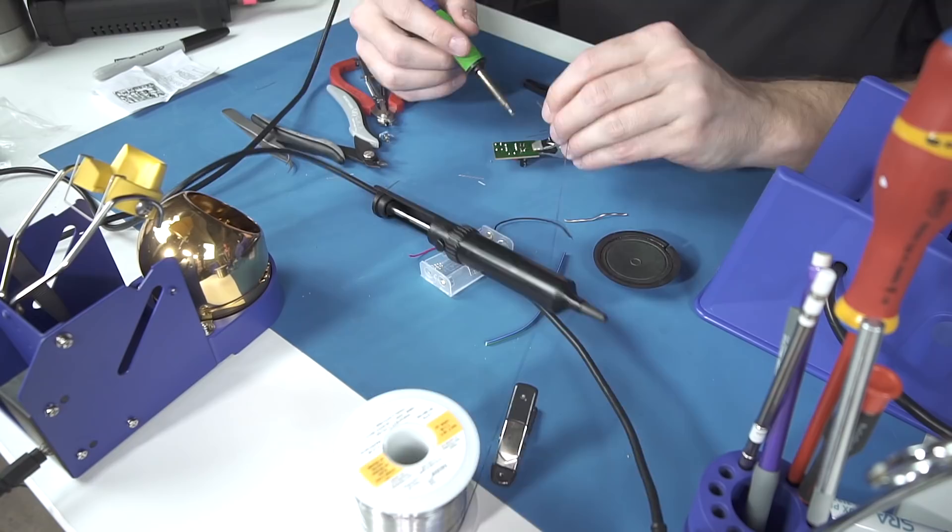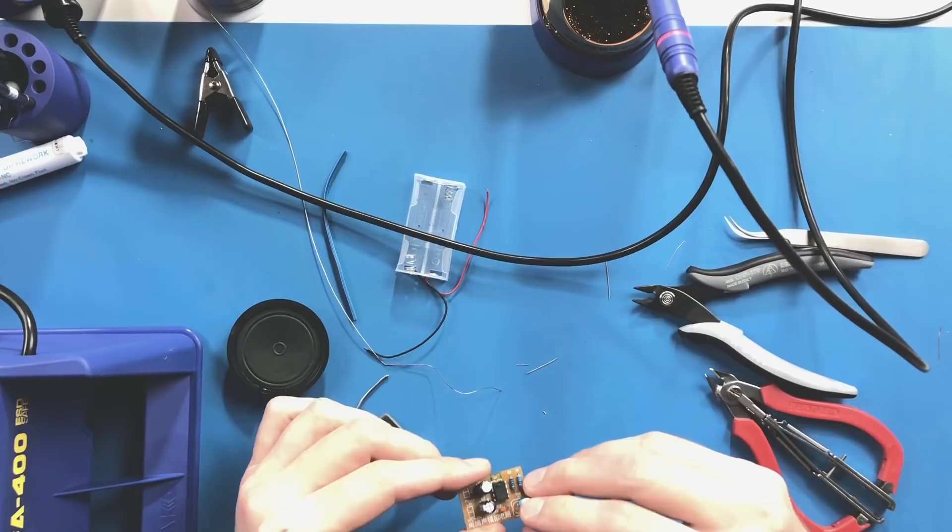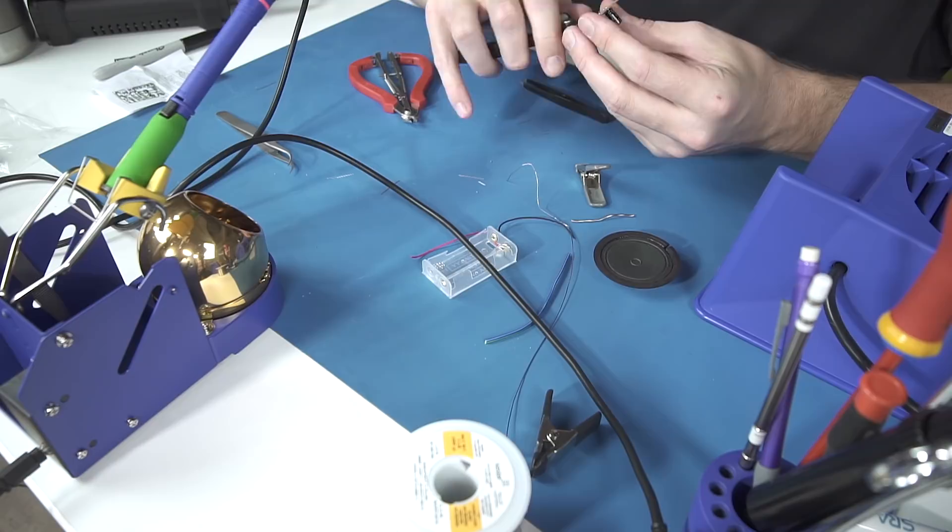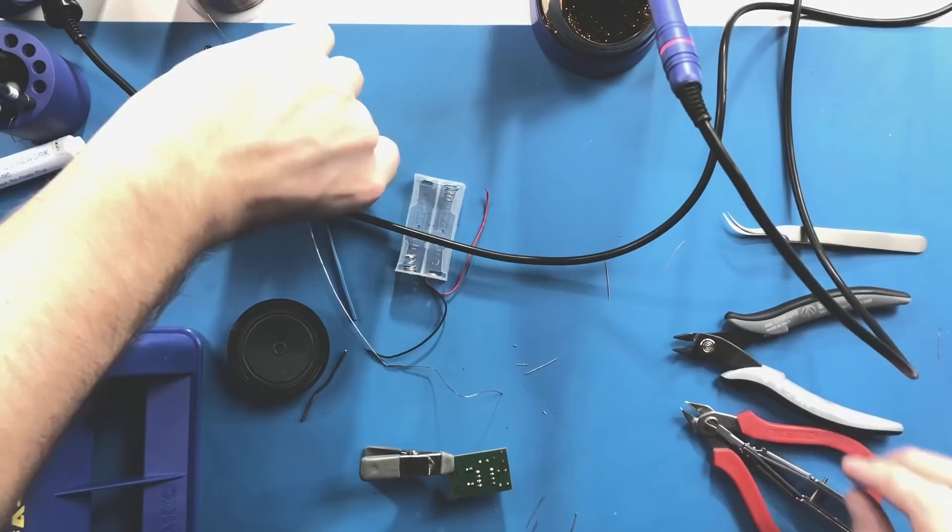With those out of the way, we move on to the potentiometer which has three big legs to solder. Take your time and these should be easy. We can clean up the clipped legs so they don't get stuck to the speaker here as we try to work with it. And then we solder the leads to the speaker, and we are all done.